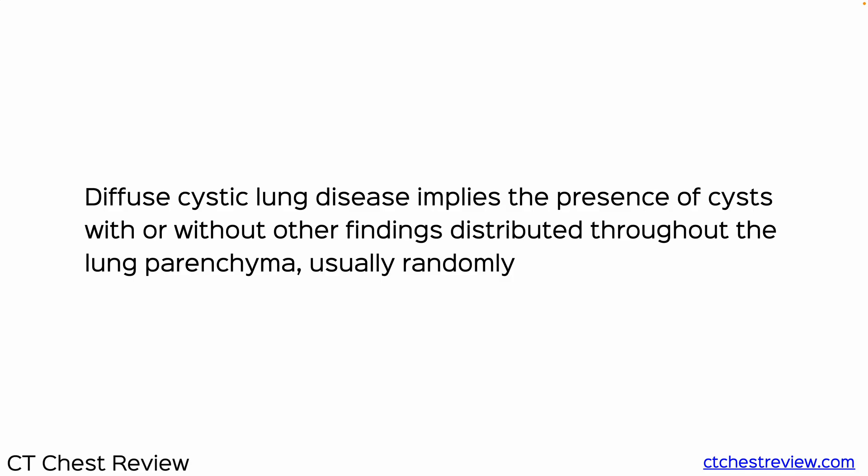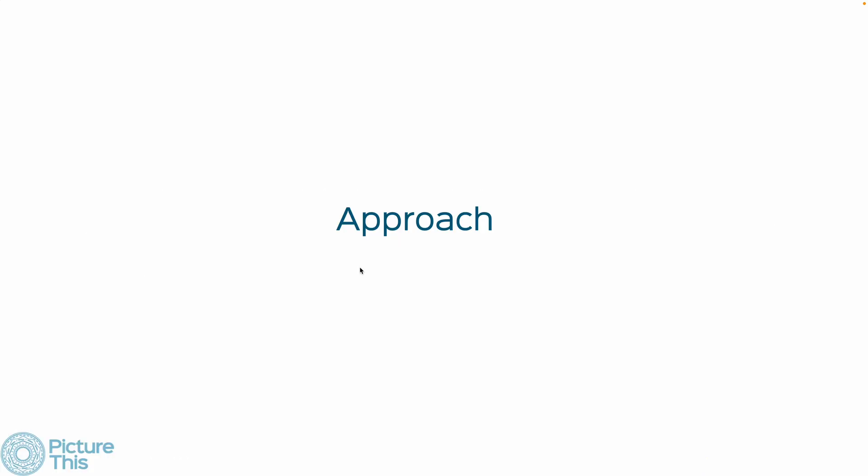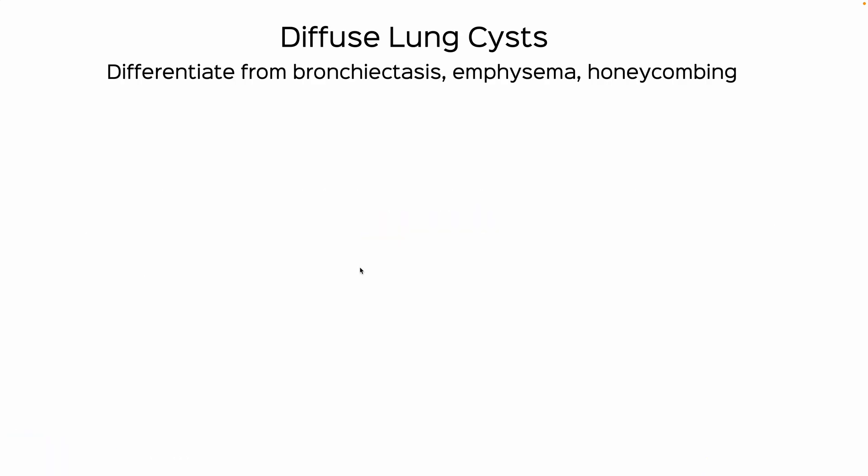Diffuse cystic lung disease implies the presence of cysts distributed throughout the lung parenchyma, usually randomly. It is important to differentiate these from other holes in the lungs such as bronchiectasis, emphysema, and honeycombing, and then figure out what to do next.